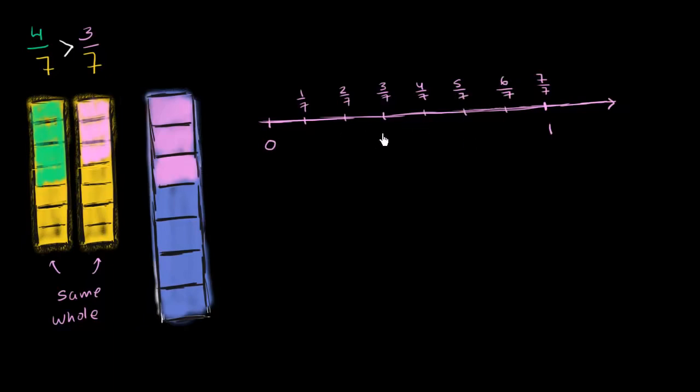And so when you look at the number line here, it's clear that 3 sevenths, which is 3 jumps from 0, 3 jumps of a seventh each, 1, 2, 3. 3 sevenths puts you right there, while 4 sevenths is a larger number. It's to the right of 3 sevenths. You have to make 4 jumps: 1, 2, 3, 4. 4 jumps of a seventh to get right over there.